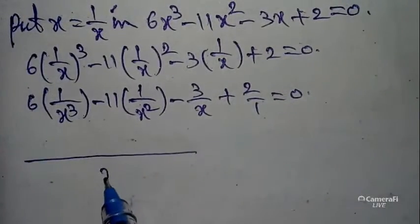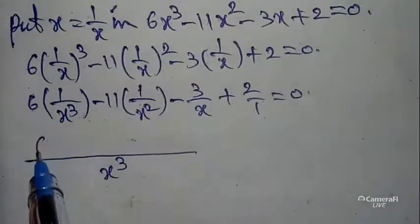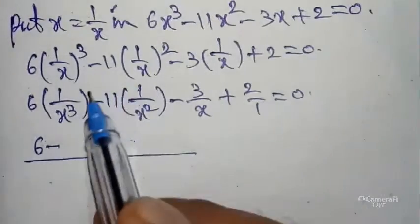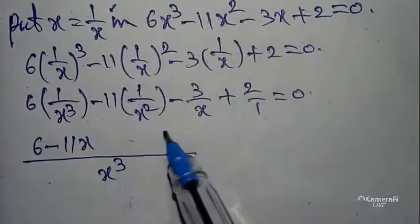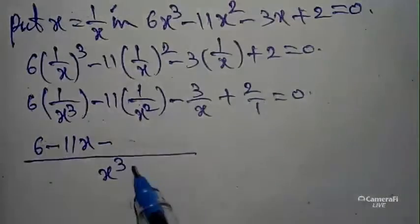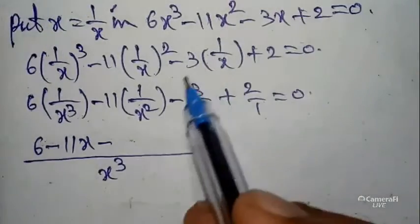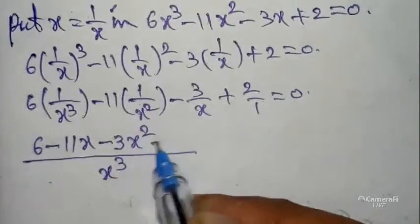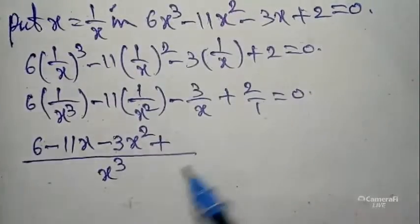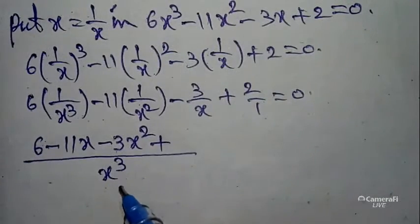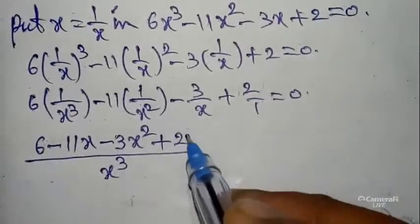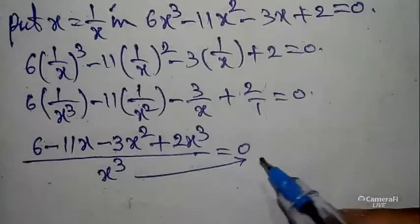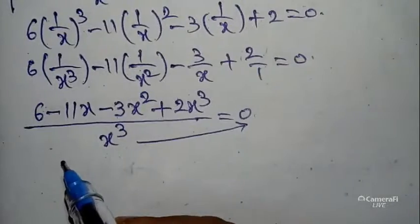Taking LCM as x³ and simplifying: 6 times 1 is 6, minus 11x (from x² term times x), minus 3x² (from x term times x²), plus 2x³ equals 0. Cross-multiplying, we get 2x³ minus 3x² minus 11x plus 6 equals 0.